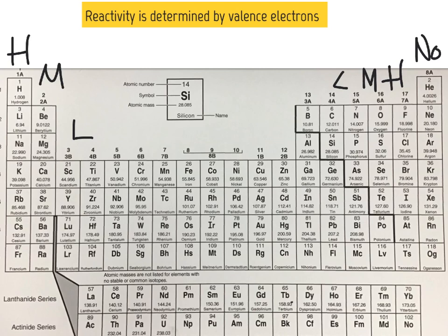Reactivity is also going to change depending upon which period you are in, or if you are a metal or a nonmetal. For our metals, francium, found in the lower left-hand corner of the periodic table, is going to have the highest reactivity of all the metals.